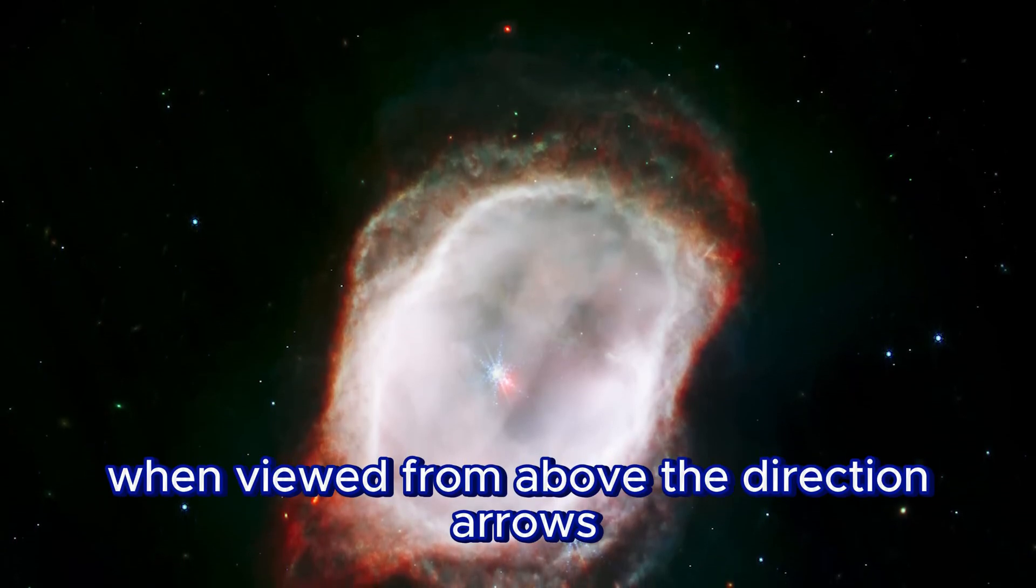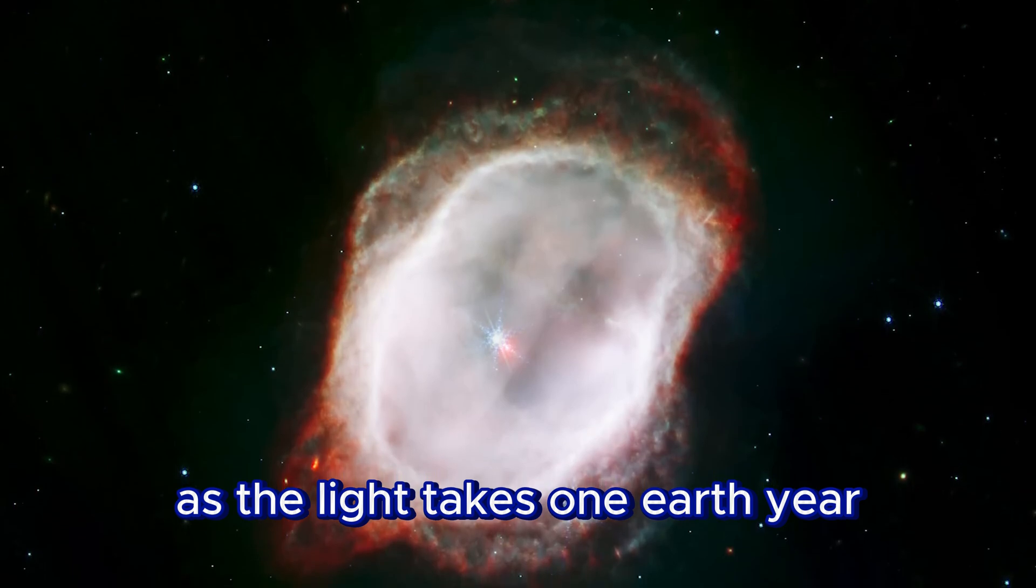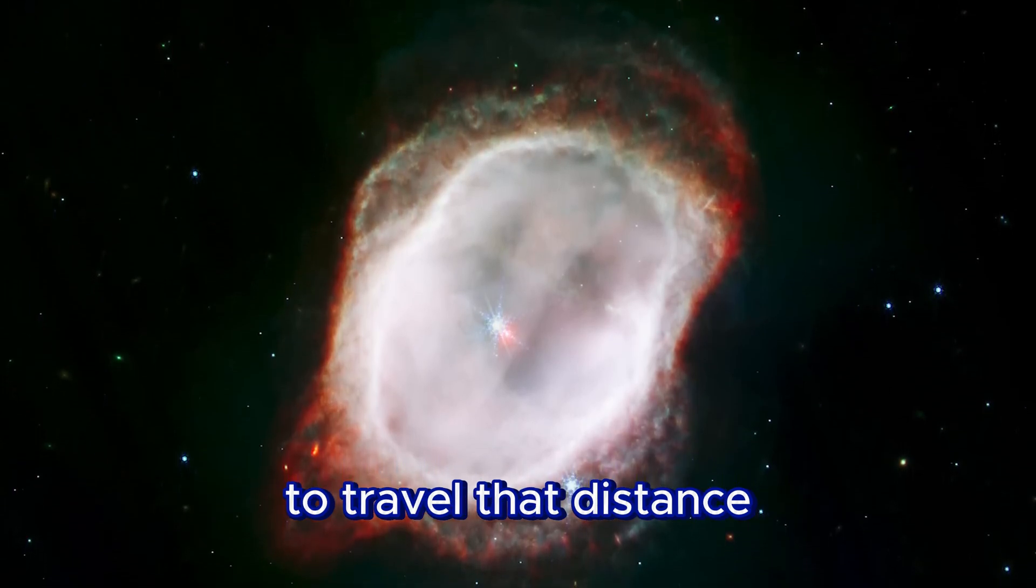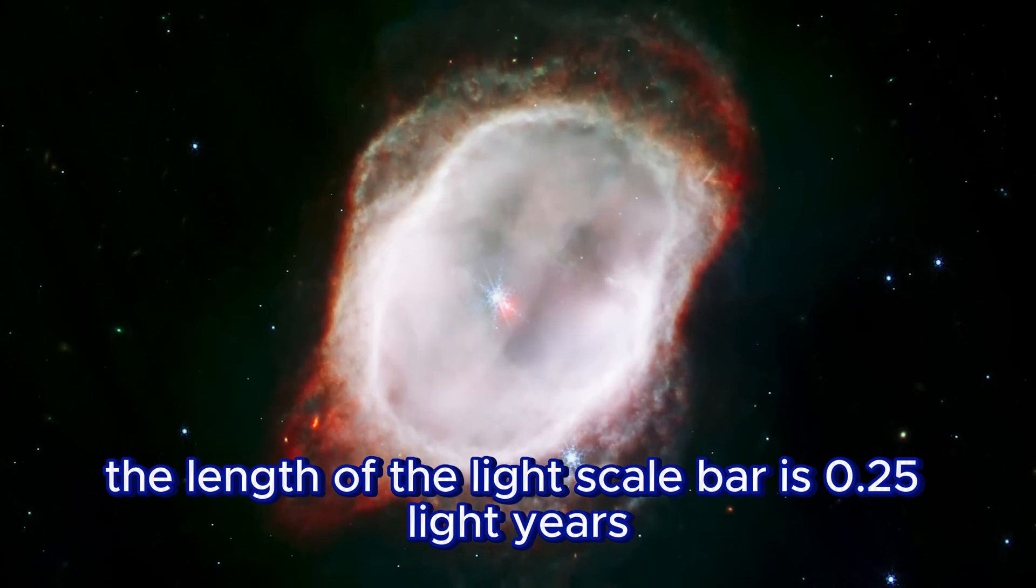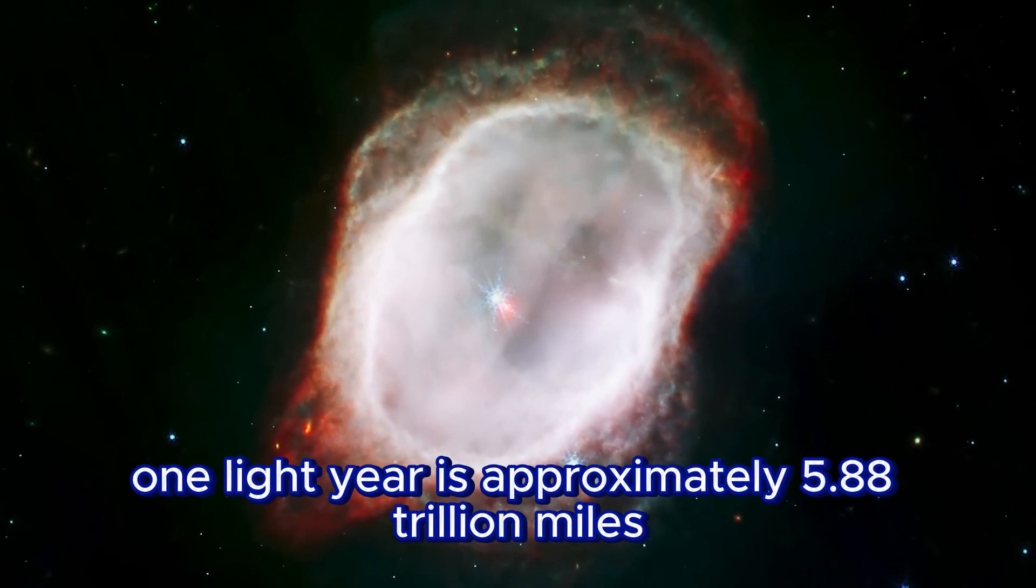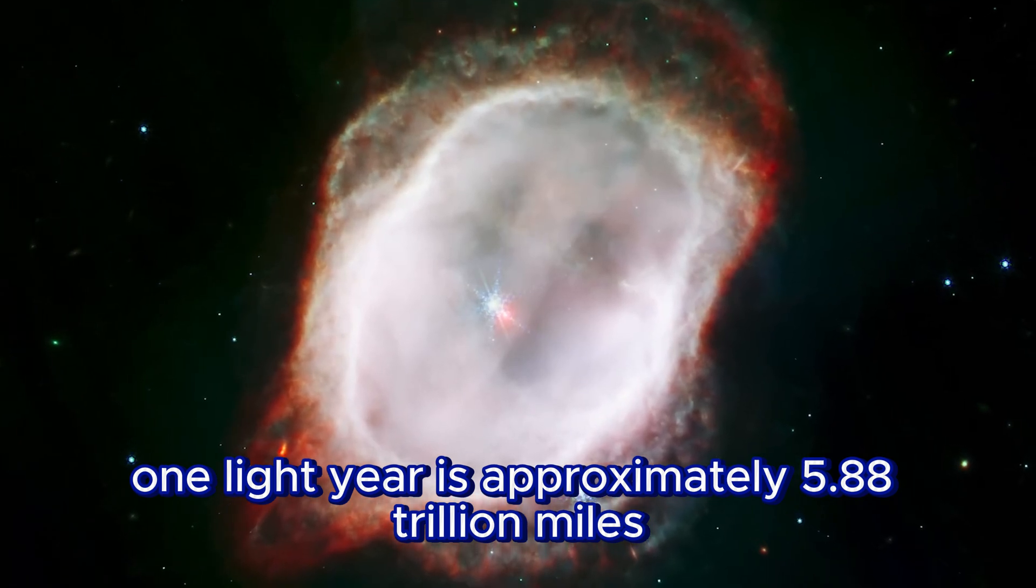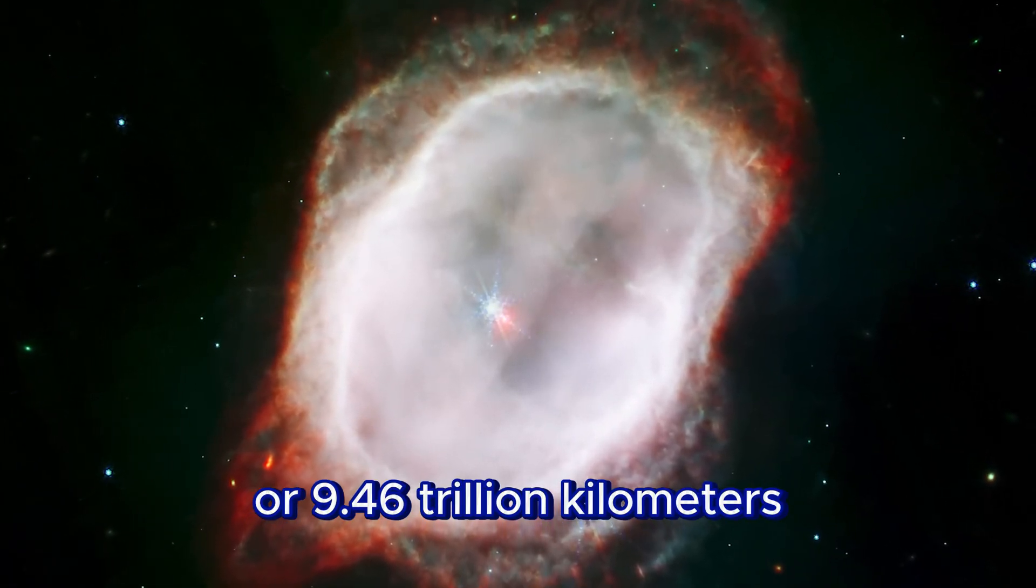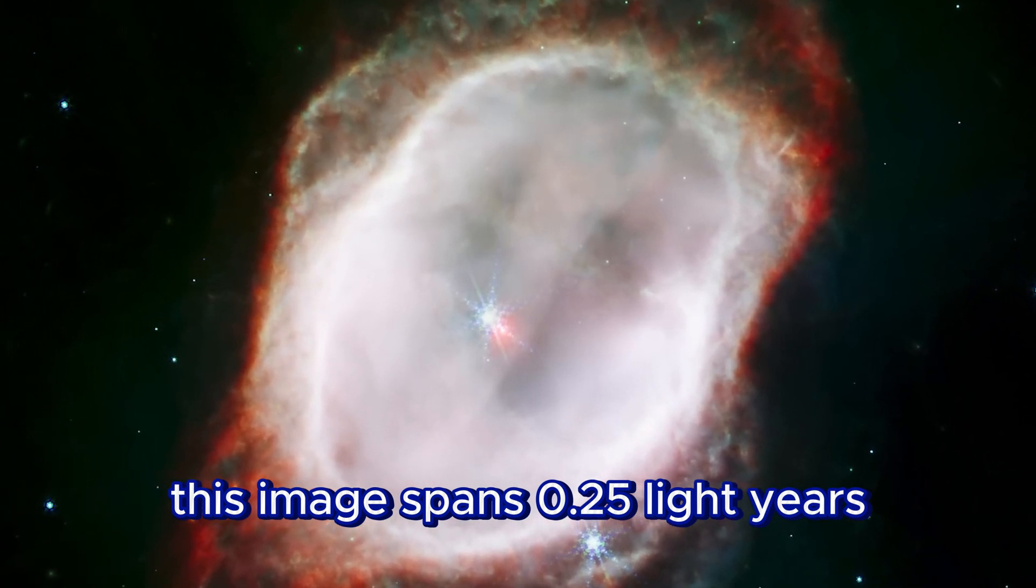When viewed from above, the direction arrows and the scale bar are in light years, as light takes one Earth year to travel that distance. The length of the light scale bar is 0.25 light years. One light year is approximately 5.88 trillion miles or 9.46 trillion kilometers. This image spans 0.25 light years.